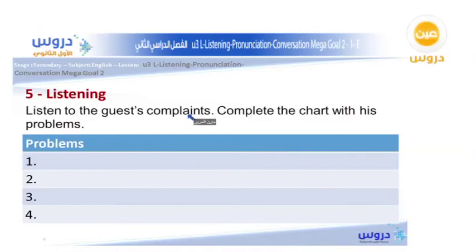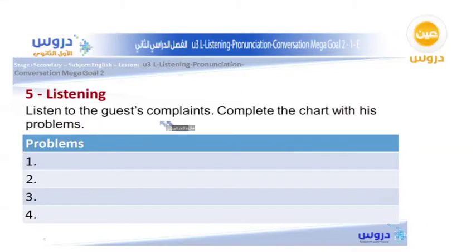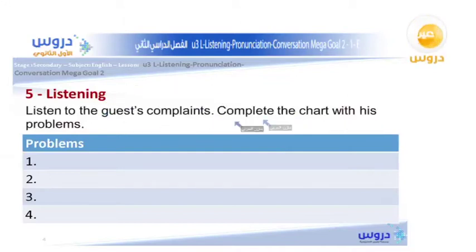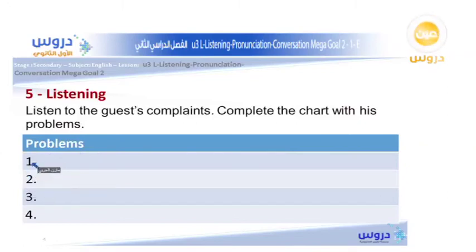Now we move to the next section. We are going to listen to a guest's complaints. After listening, you will need to complete a chart listing his problems. The chart is titled 'Problems' and has space for four or more complaints. Let's begin.